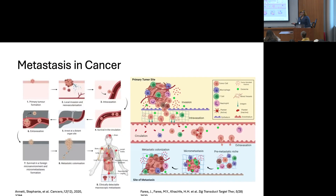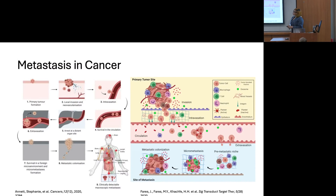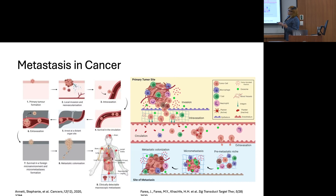The primary reason why cancer is so difficult to eradicate as well as difficult to treat overall is due to the fact that it can spread throughout the body. Typically, what happens in metastasis when it occurs is that the cells detach from the primary tumor. From there, they penetrate the tissue, then intravasate into the blood vessel, and then they begin to circulate.